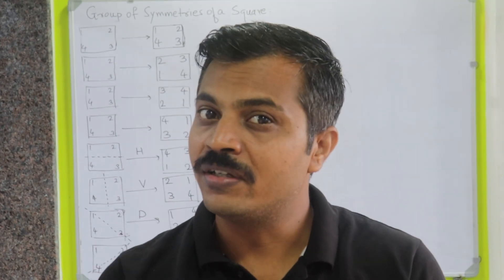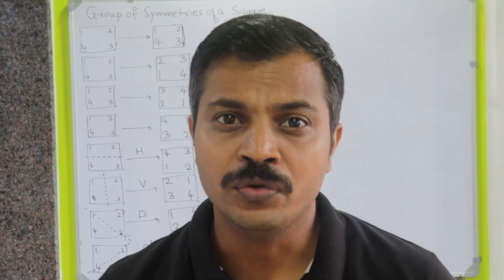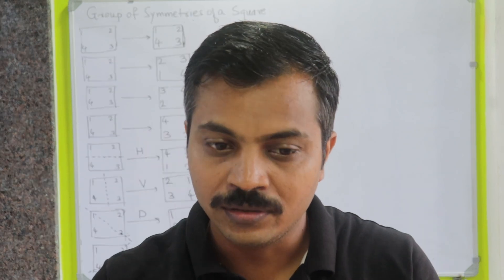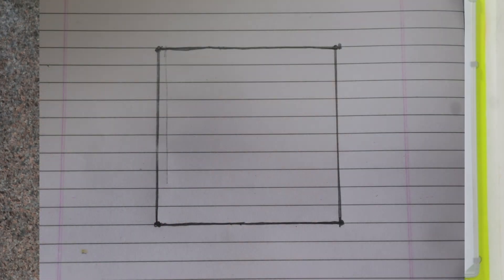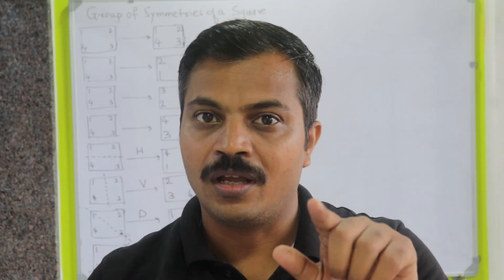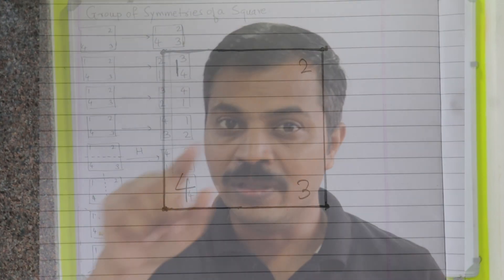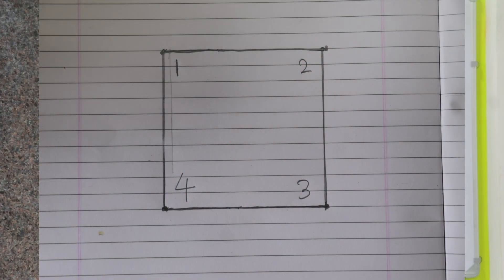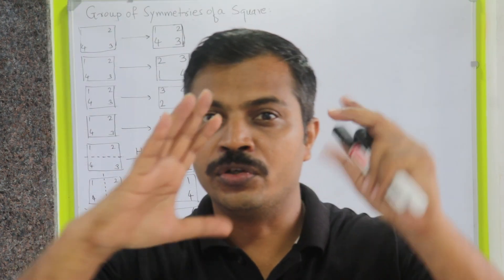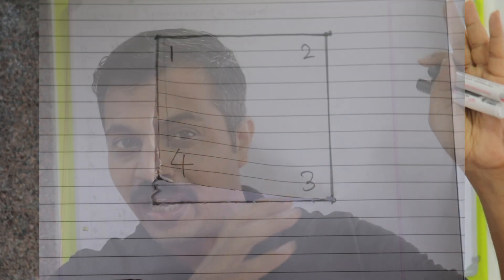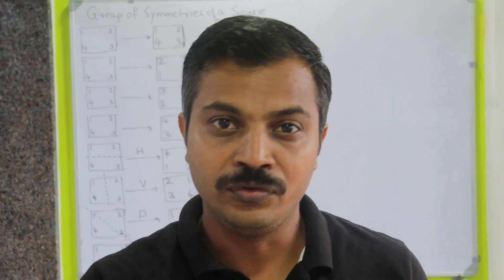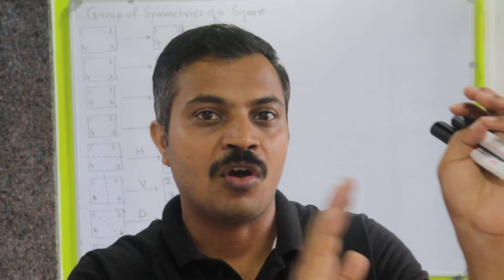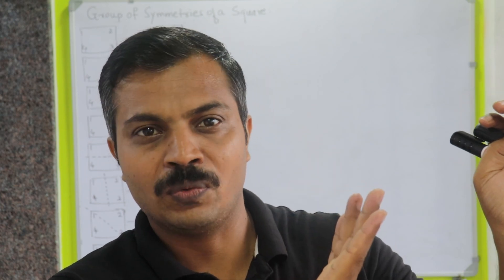In order to find the symmetries of a square, you take a piece of paper, draw a square inside it, and give labels in clockwise direction: 1, 2, 3, and 4. After that, remove that square from the piece of paper and give the same labels on the other side of that square as well.